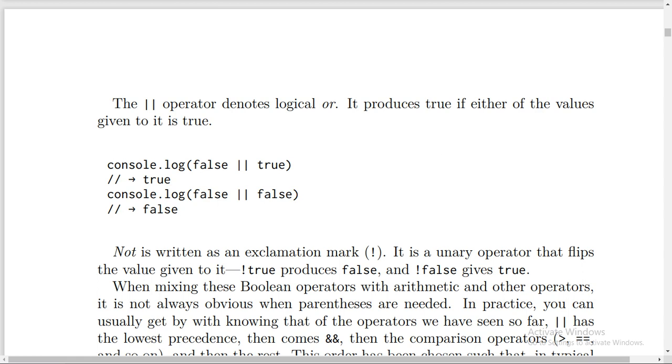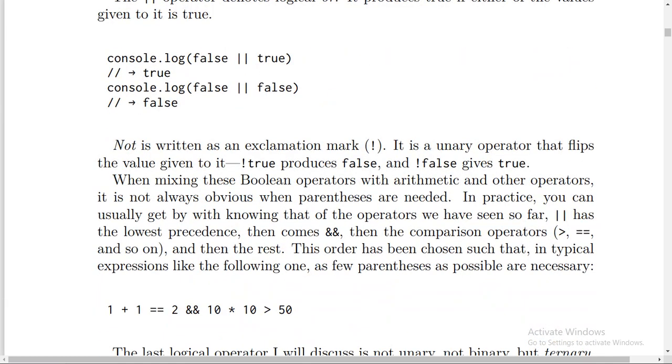NOT is written as an exclamation mark. It's a unary operator that flips the value given to it. !true produces false, and !false gives true. When mixing these Boolean operators with arithmetic and other operators, it's not always obvious when parentheses are needed. In practice, you can usually get by with knowing that of the operators we have seen so far, OR has the lowest precedence,